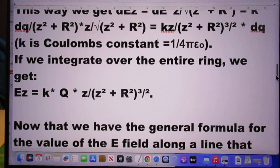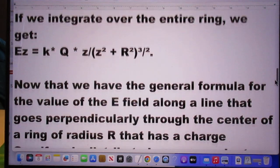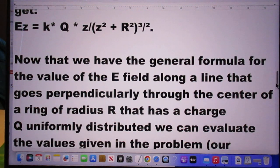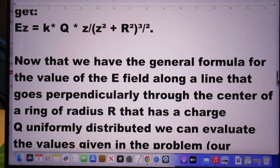If we integrate over the entire ring, we get EZ. Very simple. But that was one ring, and we have two.